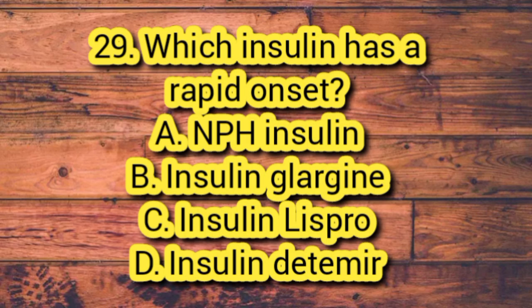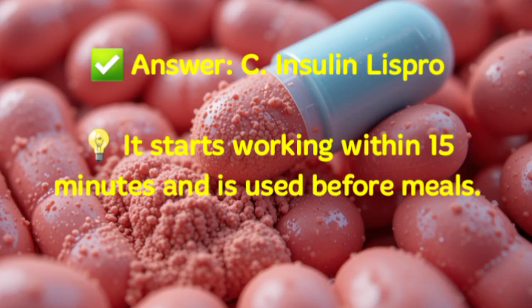Question 29. Which insulin has a rapid onset? A. NPH insulin. B. Insulin glargine. C. Insulin lispro. D. Insulin detemir. Answer: C. Insulin lispro. It starts working within 15 minutes and is used before meals.